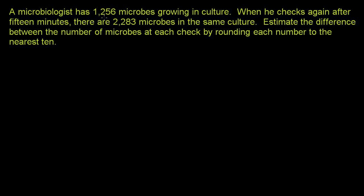A microbiologist has 1,256 microbes growing in culture. When he checks again after 15 minutes, there are 2,283 microbes in the same culture. They're growing pretty fast. Estimate the difference between the number of microbes at each check by rounding each number to the nearest 10.